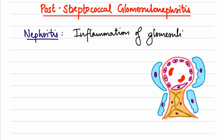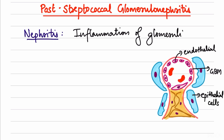When the glomerulus is inflamed, we need to understand the parts of a glomerulus. Diagrammatically, we have the endothelial cells, the glomerular basement membrane, and the epithelial cells. These three cells mainly form the parts of a glomerular filtration membrane, along with the mesangial matrix.